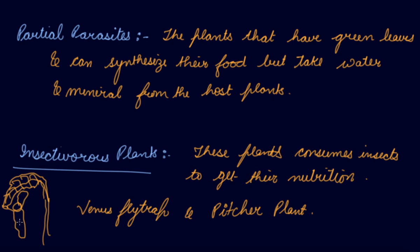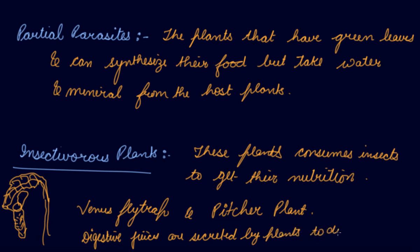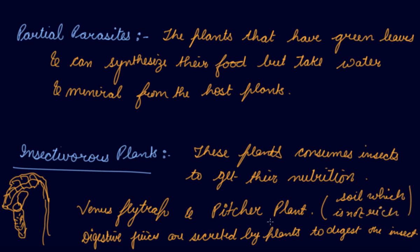This structure has small hairs pointed downwards. Whenever an insect enters the pitcher plant, the lid closes to trap it, and the insect gets entangled in these hairs. The cells of the pitcher plant then secrete digestive juices to digest the insect. These plants can grow in soil that is not rich in nutrients, as they get their nutrients from the insects.